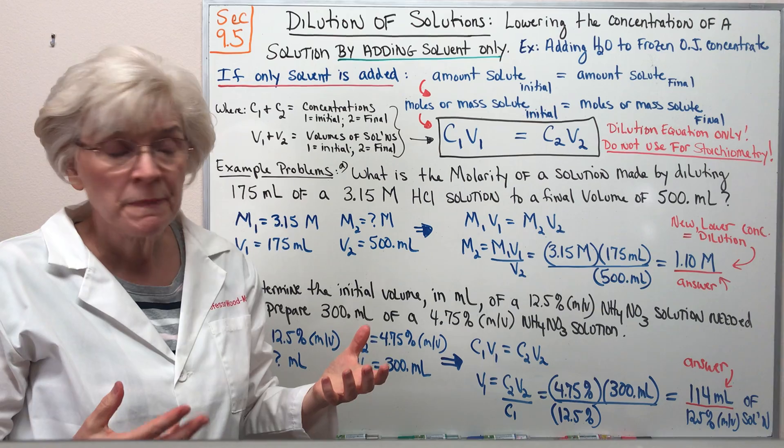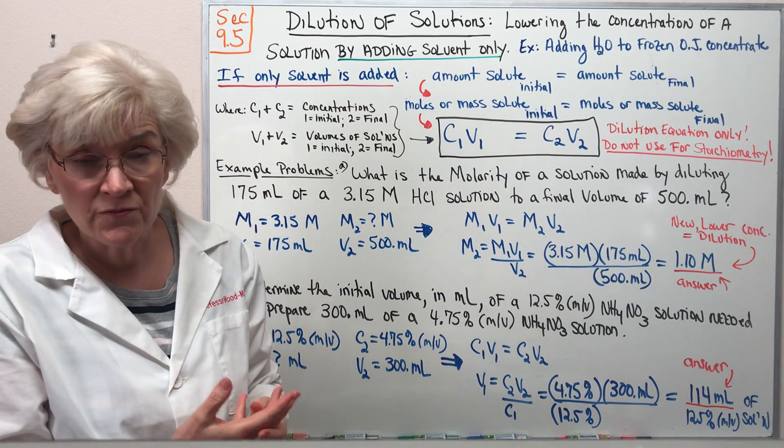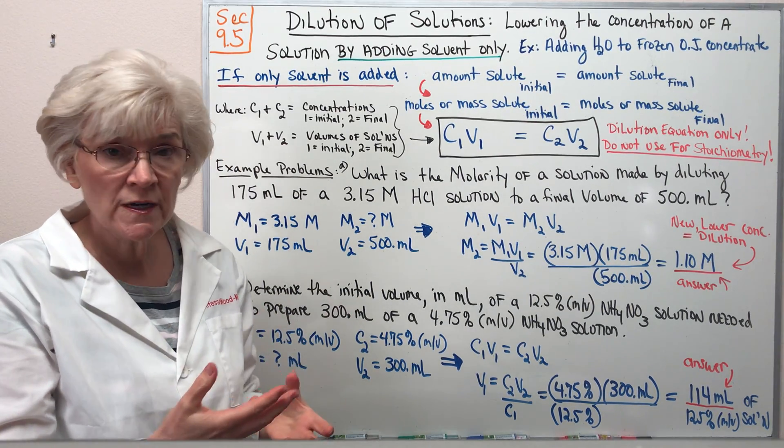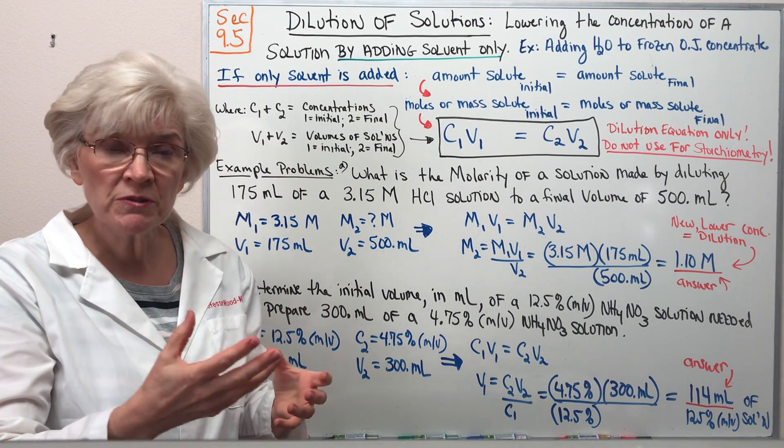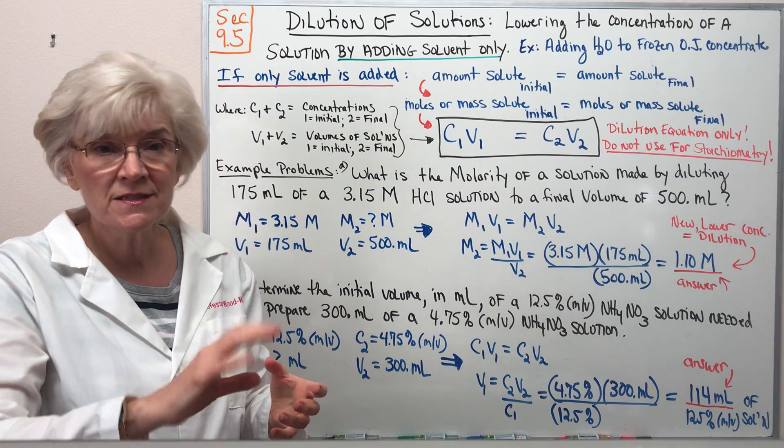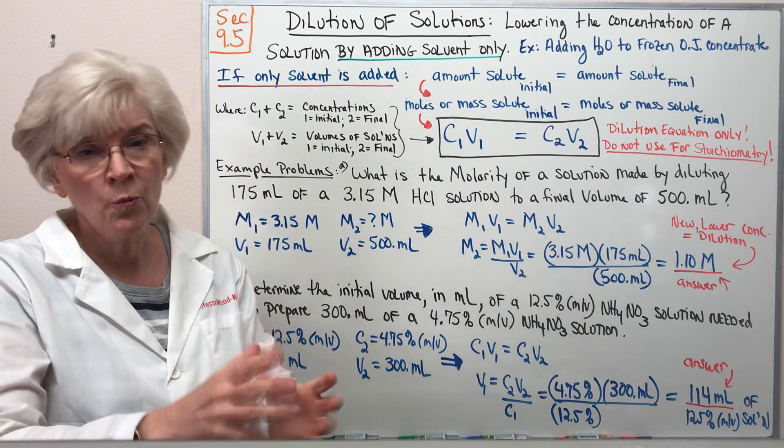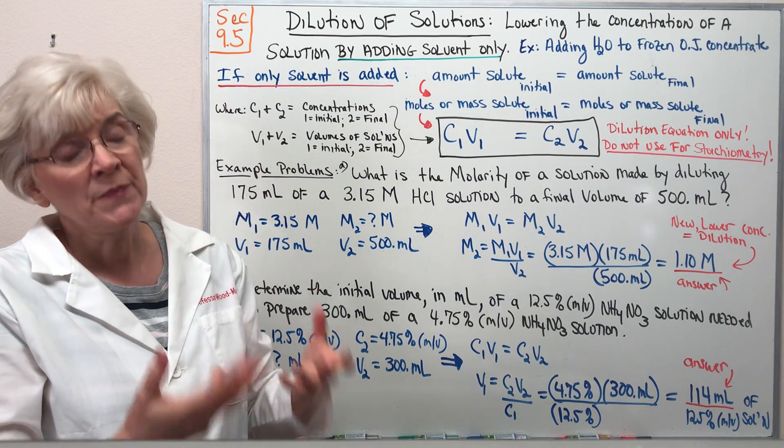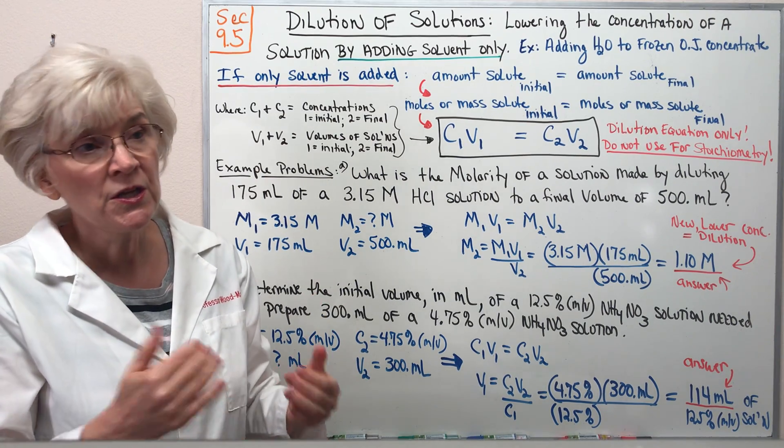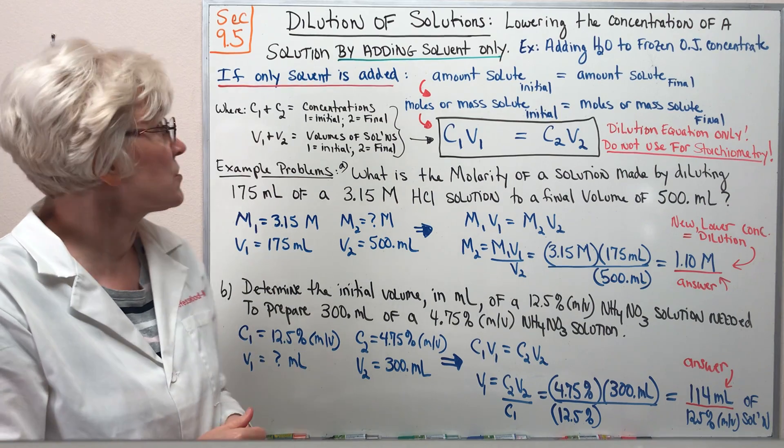For example, if you bought a frozen can of orange juice at the store, came home, and put it in a large pitcher, directions usually read to add three cans of water for every one can of frozen orange juice concentrate. By adding more solvent you are lowering the concentration of solution.